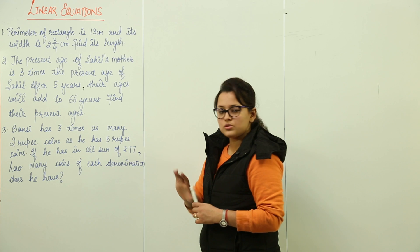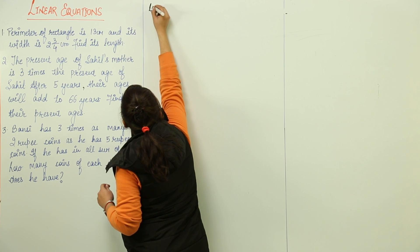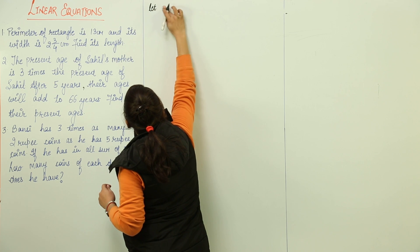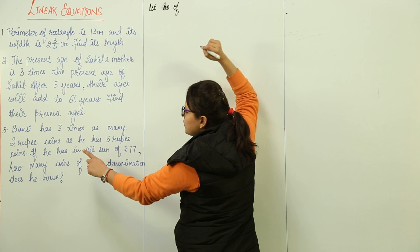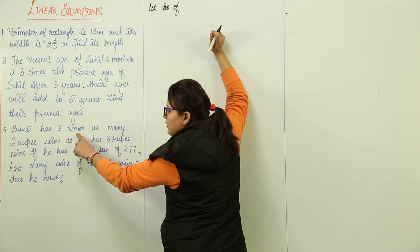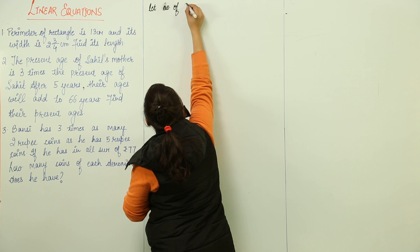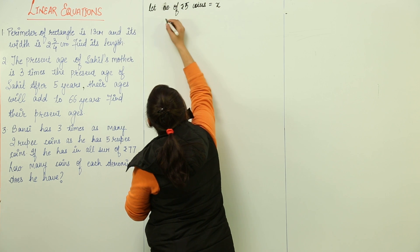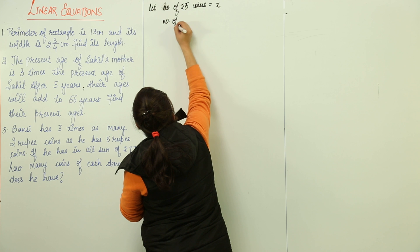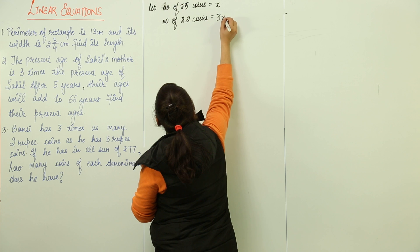So, how do we do such questions? Let us start. Let's assume the number of two rupee coins. The number of two rupee coins is three times that of the five rupee coins. So, I am taking the number of five rupee coins to be X. The number of two rupee coins would be three times of this, that means three X.